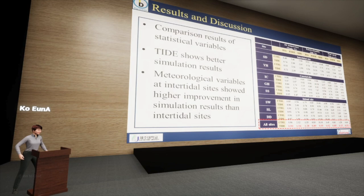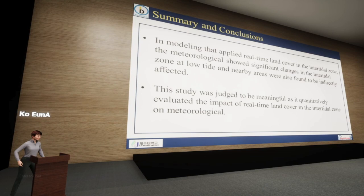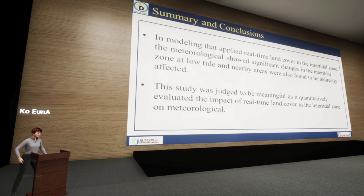This brings us to the end of my presentation. In this study, we conducted a quantitative analysis to assess the influence of time-varying land cover within the intertidal zone on coastal meteorological prediction. The results revealed that temporal changes in the intertidal zone had a significant impact on meteorological variation in both the intertidal and surrounding areas. Notably, the impact and contribution of time-varying land cover was greater in the intertidal zone compared to inland. Therefore, this study is significant as a quantitative assessment of the impact of real-time land cover change in the intertidal zone on coastal meteorology. That's all I have prepared for today. Thanks for your time.